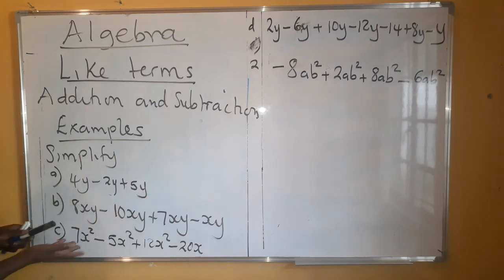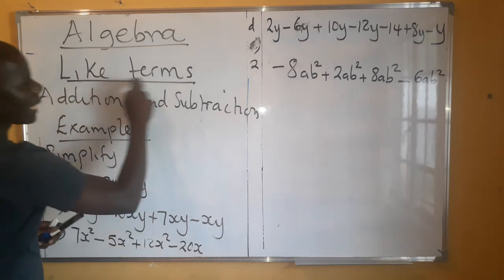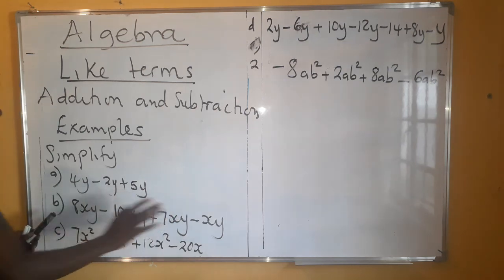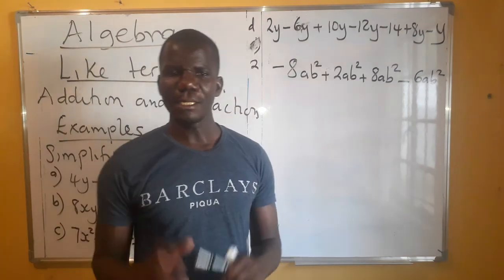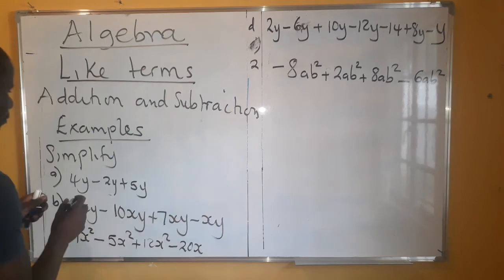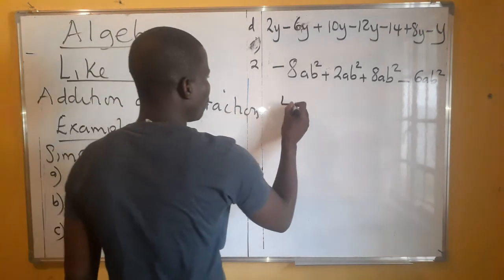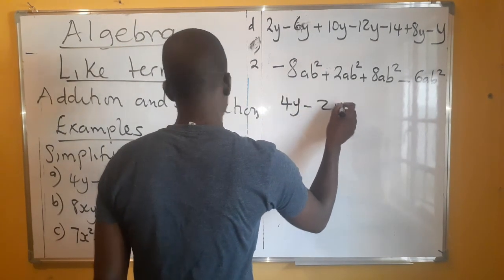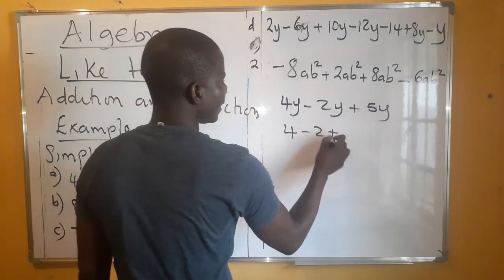So let's get started. How do we simplify? We are confining ourselves to the like terms throughout. What we're having is y — it's y, isn't it? So as long as you don't have issues with integers, you won't have challenges with this part. Let's start with the first one: 4y minus 2y plus 5y.